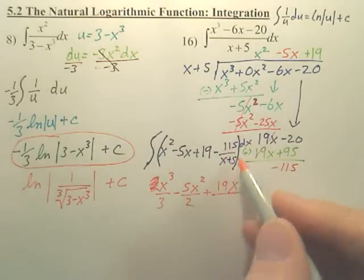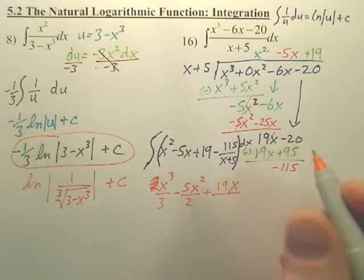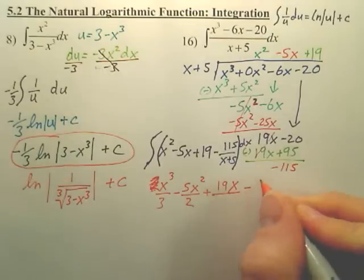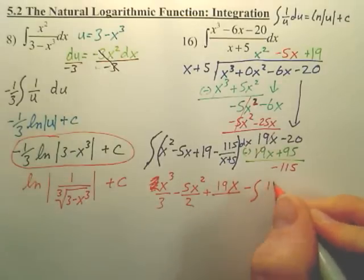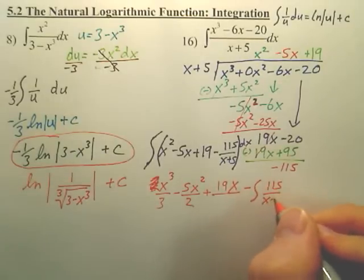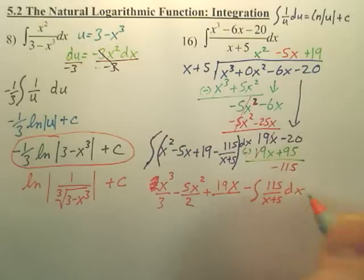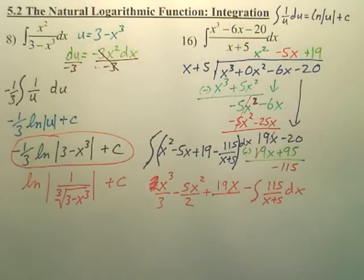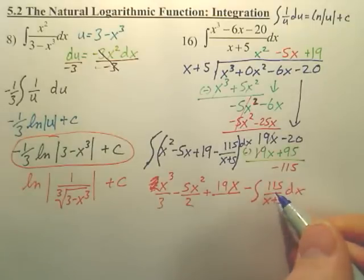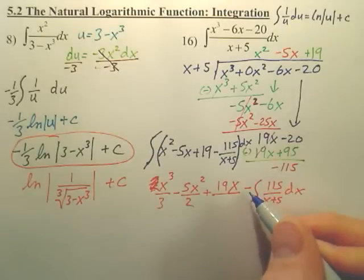And then this last one, I'm just going to do this for a second, because this one might take a little bit more thinking. So for this last piece, do you understand? I could pull out the 115 out, and then I have 1 over this, correct?